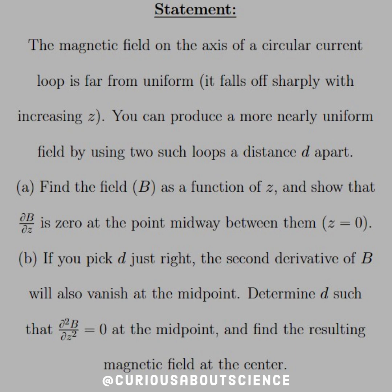Remember the square root z term from when we found it with Biot-Savart. But you can produce a more nearly uniform field by using two such loops at a distance d apart.